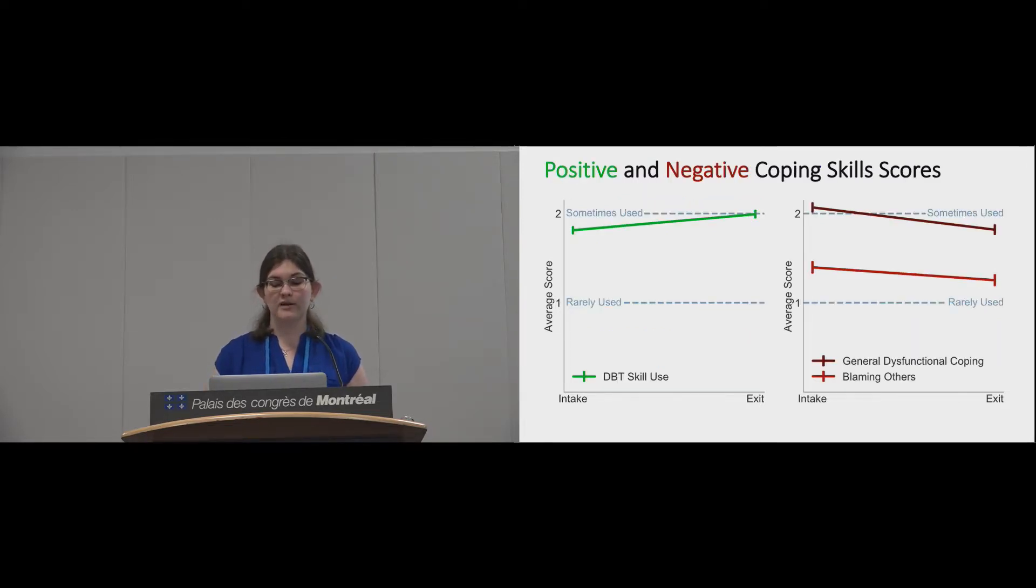We also graphed the changes in the DBT ways of coping checklist subscales between the intake and exit surveys. For these scales, higher numbers indicate more frequent use of that type of coping mechanism. We found an increase in DBT skills use, which indicates that people started using positive skills more often. We also found a decrease in general dysfunctional coping and coping by blaming others, indicating that people started using these negative coping mechanisms less frequently.